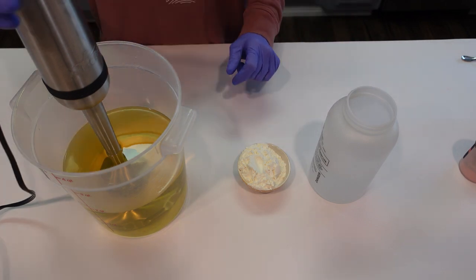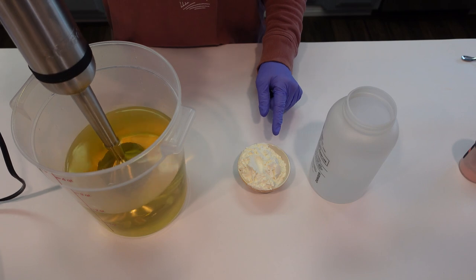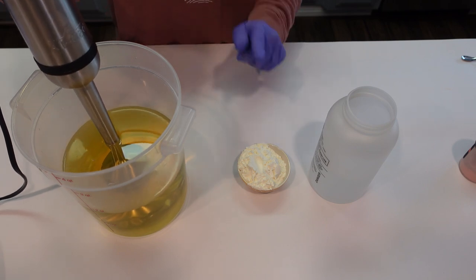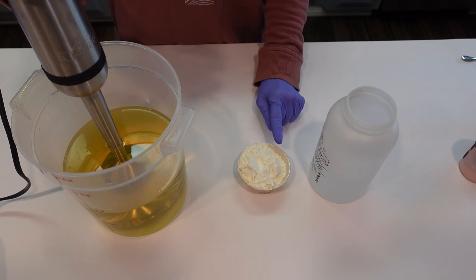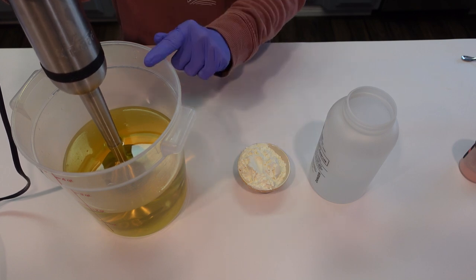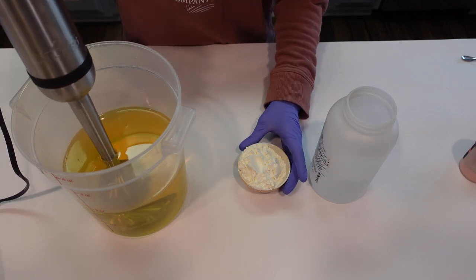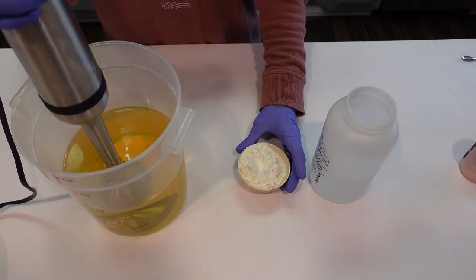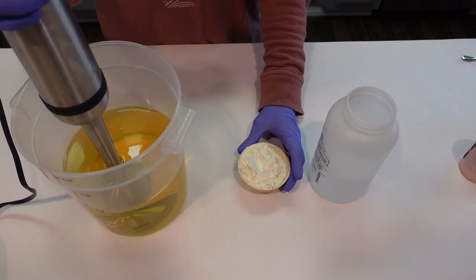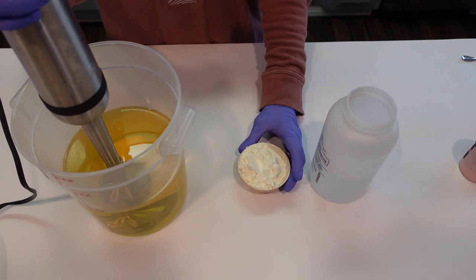So the first thing we're going to do is go ahead and blend up our goat milk powder into our oils. You guys have seen me reconstitute this with water. This time around we're just going to go ahead and add it into the oil phase here and then we're going to be blending it just until it's smooth. So in this bucket here I have olive oil, palm oil, castor oil, cocoa butter, coconut oil, and sweet almond oil.